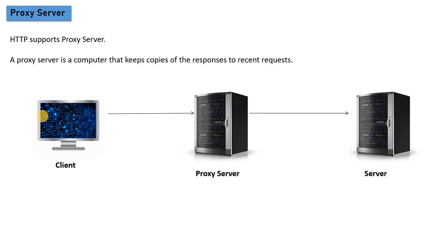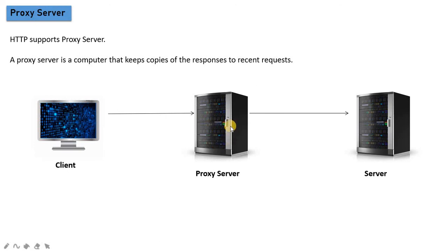For the first time request, the client sends the request directly to the corresponding server, but the proxy server will check its cache — whether the request or the object you are demanding is in cache. If it is in cache, then the proxy server sends the response directly. But if the proxy server does not have the object, it sends the request to the corresponding server and saves the response.